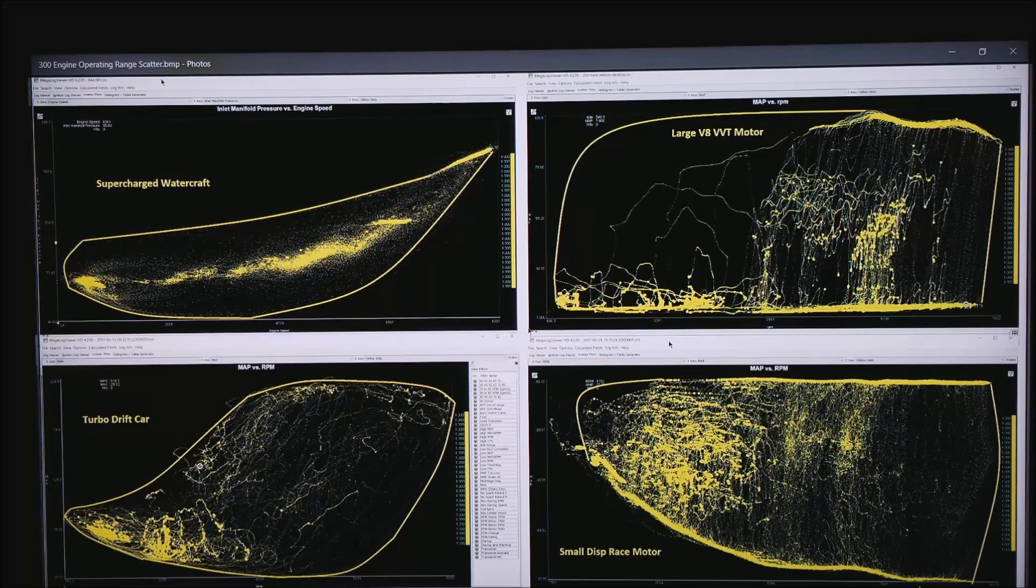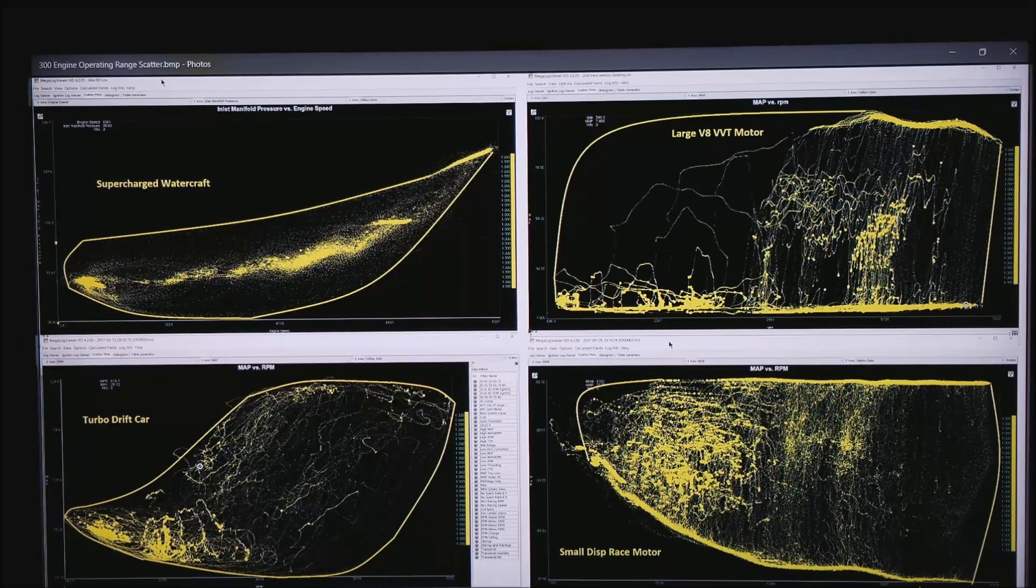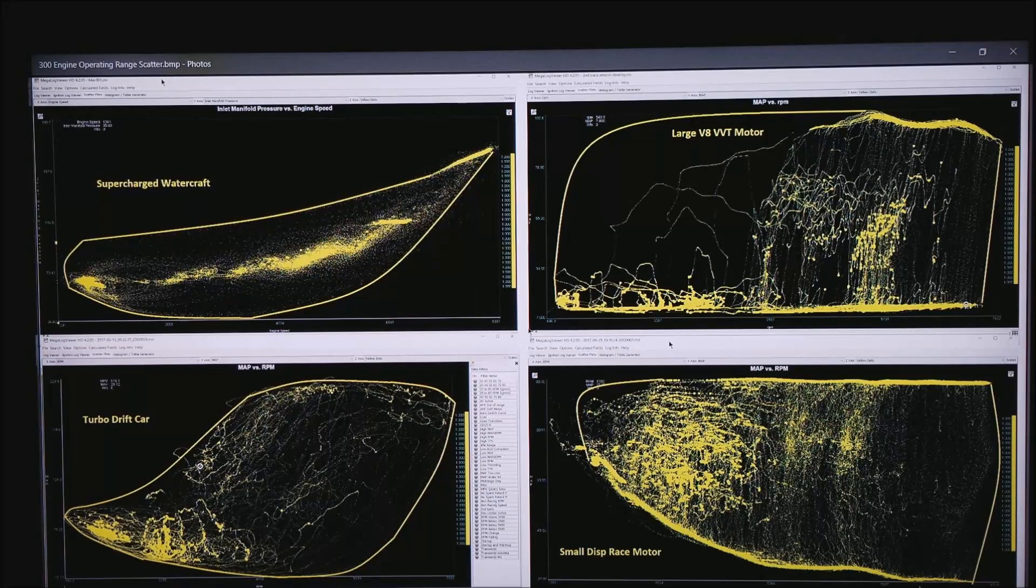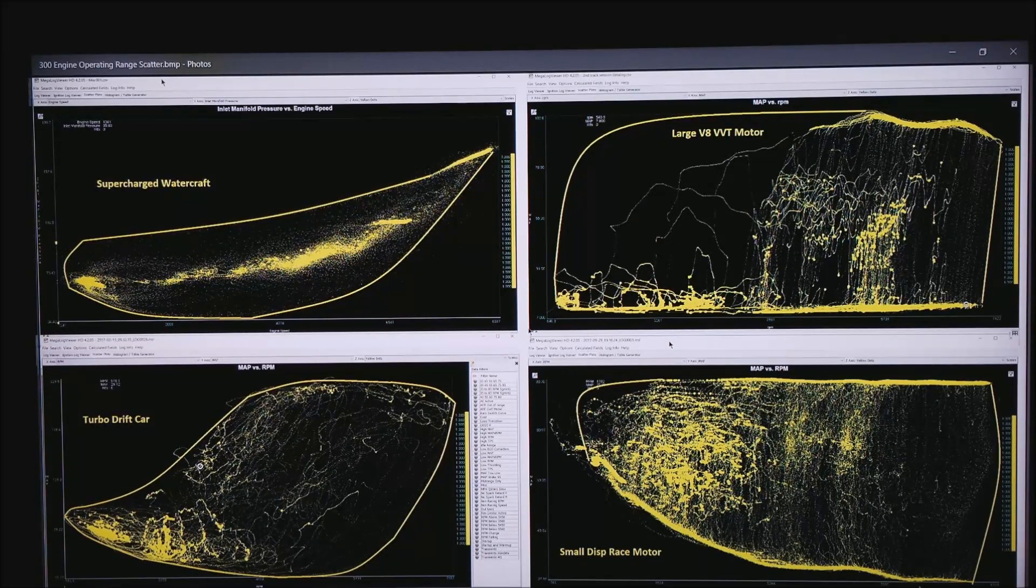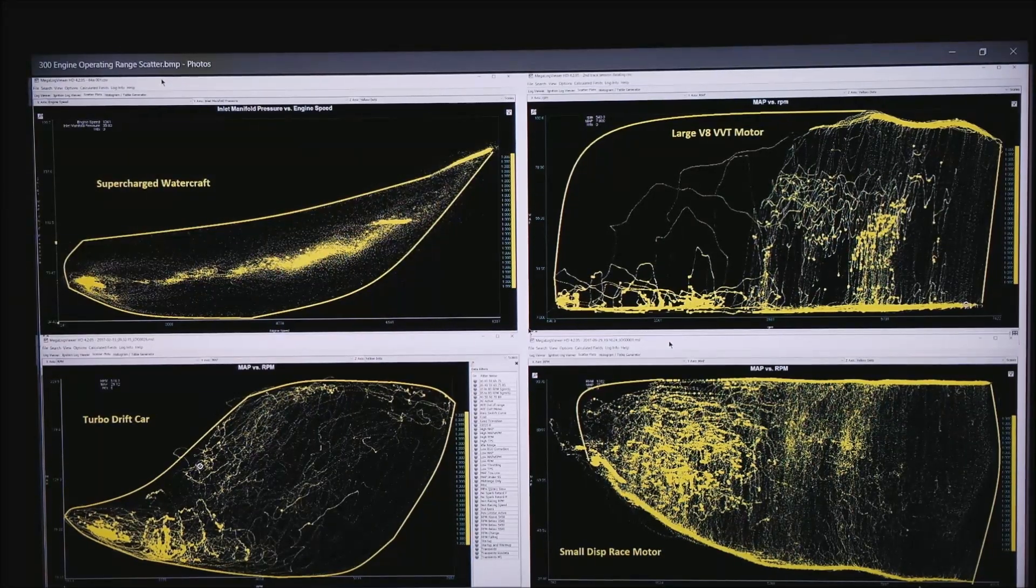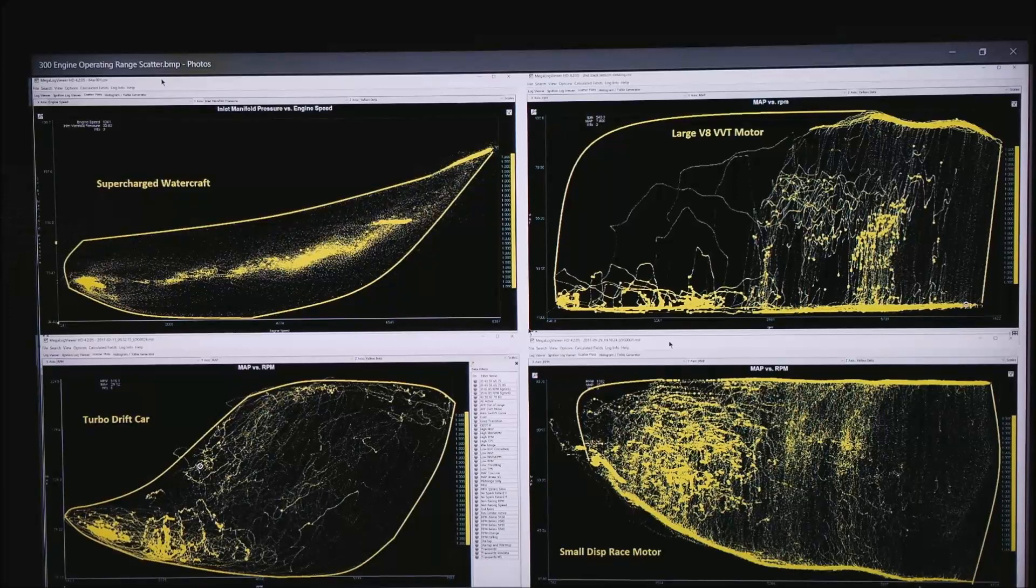This is the footprint on four different motors. Notice on the upper left this is a supercharged jet ski. This happens to be a centrifugal blown motor. Along the top is the full power, the downshift and this is the idle in the lower left. This is where you spend most of your time.